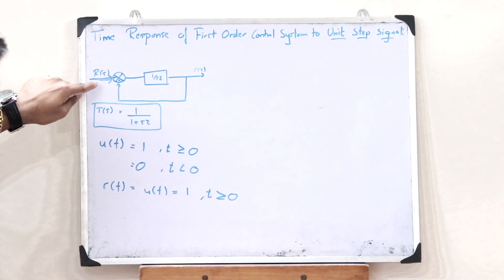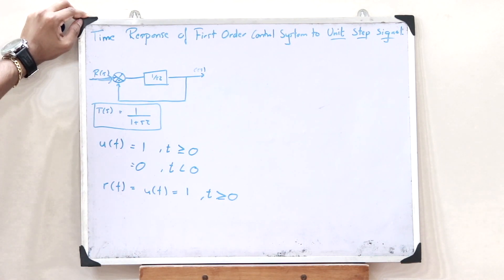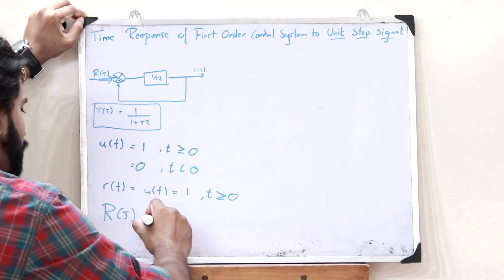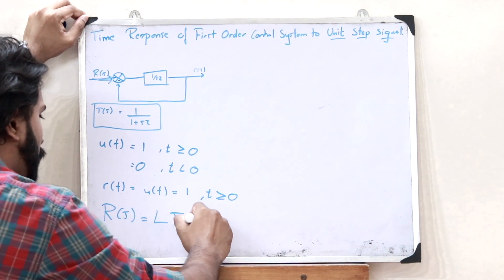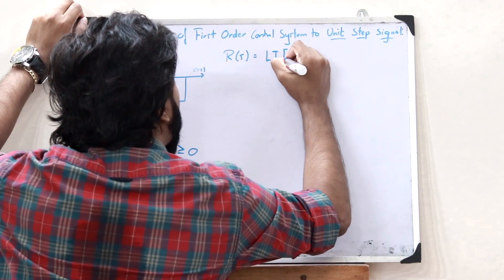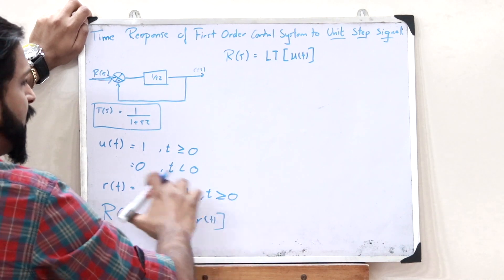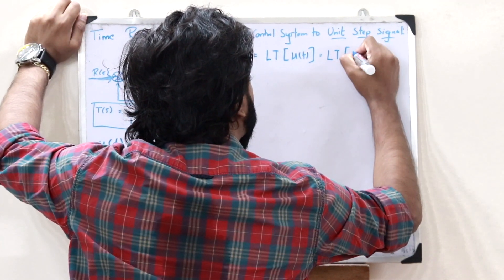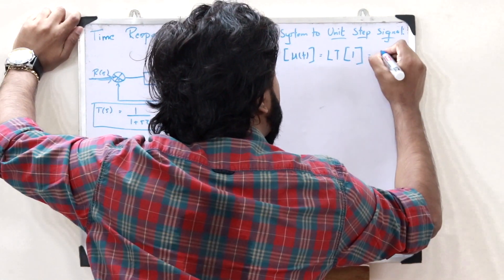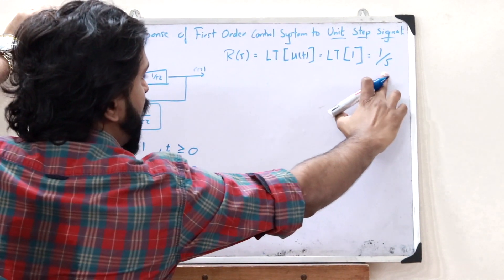But the input is given as r(s), so in order to convert from the time domain to the frequency domain, we take the Laplace transform of r(t). Therefore, r(s) = Laplace transform of r(t) = Laplace transform of u(t). Since u(t) = 1 for t ≥ 0, this equals the Laplace transform of 1, which is 1/s. So we have obtained r(s) = 1/s.